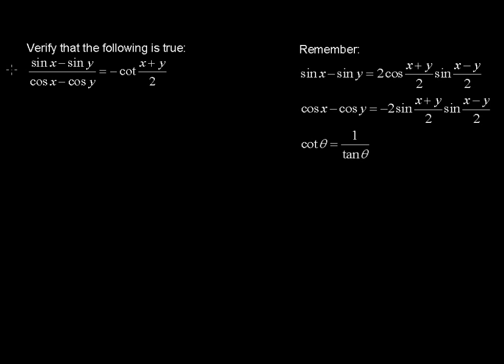Verify that the following is true: sine x minus sine y over cosine x minus cosine y equals negative cotangent of x plus y over 2. And we've got some identities here. There certainly are many more identities, but I've written these down because I know we're going to use these.